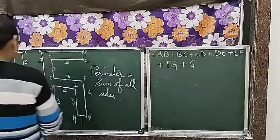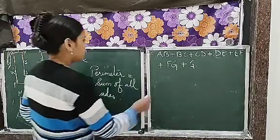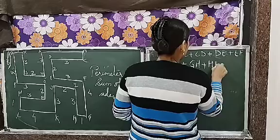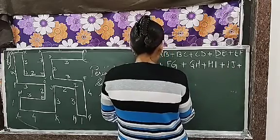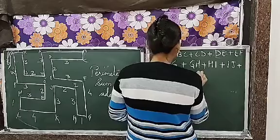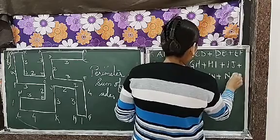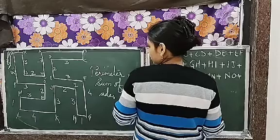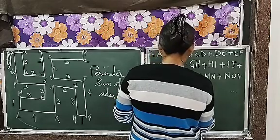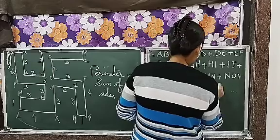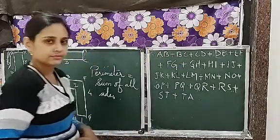So it's AB plus BC plus CD plus DE plus EF then FG, GH then HI then IJ, JK, KL, LM, am I going correct? LM, MN, NO, OP, OPQ, QR, RS and finally TA. Okay?